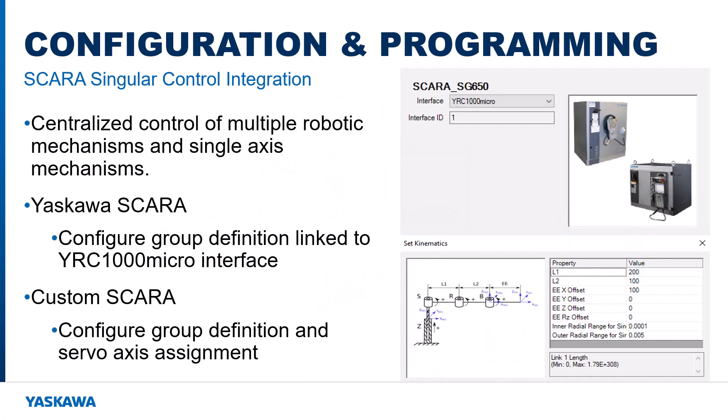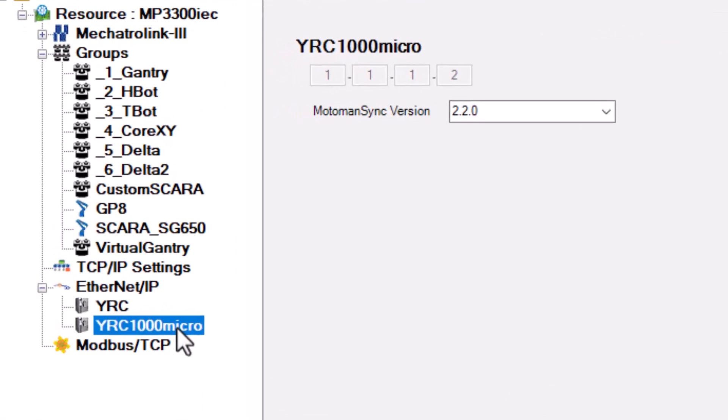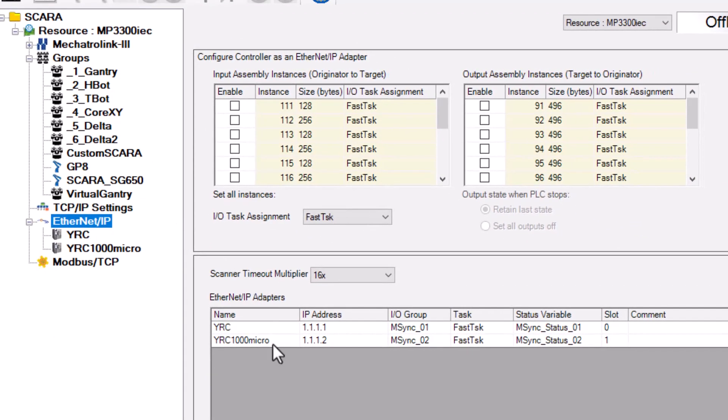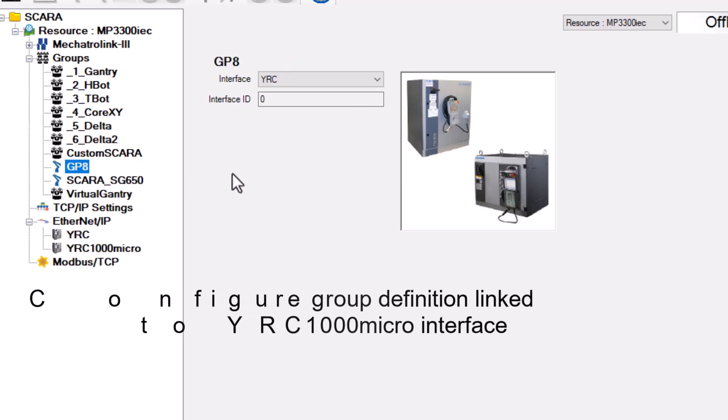Regardless of the connection scenario, all robots and multi-axis mechanisms are configured and programmed using the same IEC 61131-3 and PLCOPEN function blocks. For example, in MotionWorks IEC hardware configuration, the YRC-1000 Micro robot controller exists as an Ethernet IP adapter and as a logical group for coordinated motion. This is the same for a GP8, Moto Mini, or any Yaskawa robot.